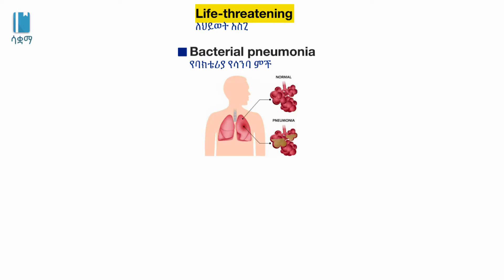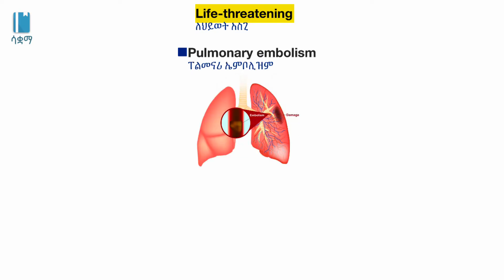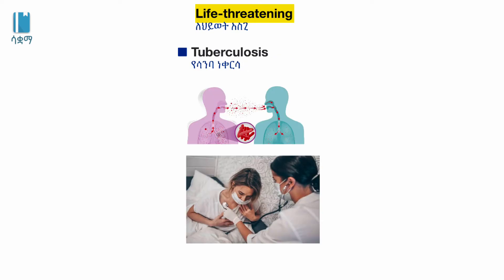Pulmonary embolism involves a blood vessel blockage. Tuberculosis and acute asthma are also significant conditions affecting the respiratory system.